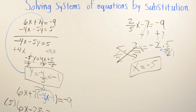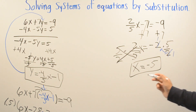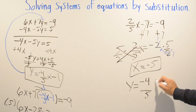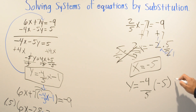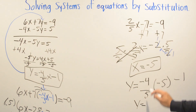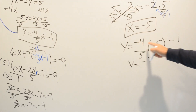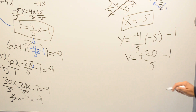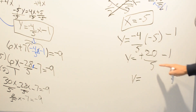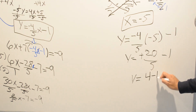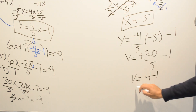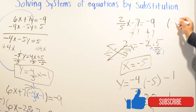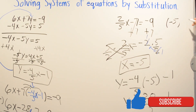Now we substitute x equals negative 5 back into y equals negative 4 over 5 x minus 1. So y equals negative 4 over 5 times negative 5 minus 1. A negative times a negative is positive, giving positive 20 over 5 minus 1. 20 divided by 5 is 4, so y equals 4 minus 1 equals 3. Our final answer is (negative 5, 3).